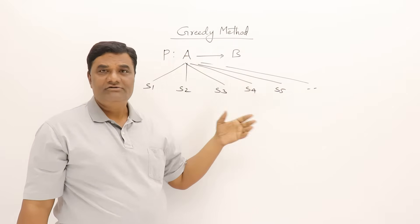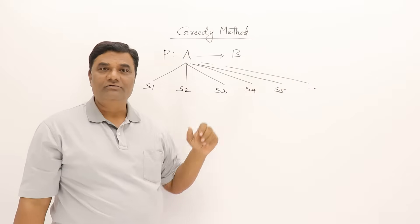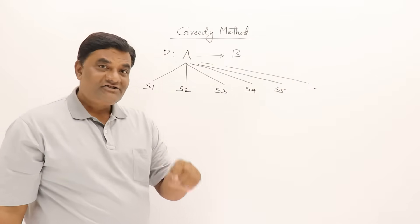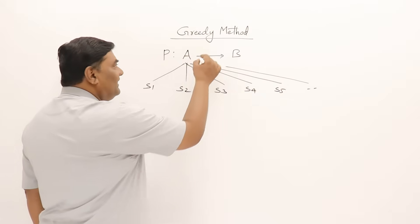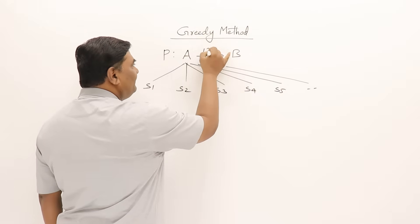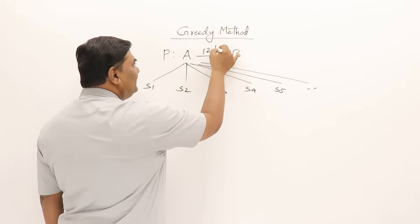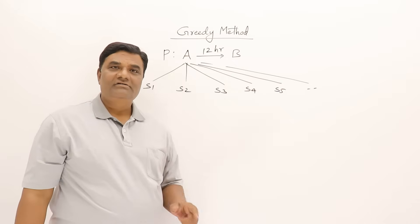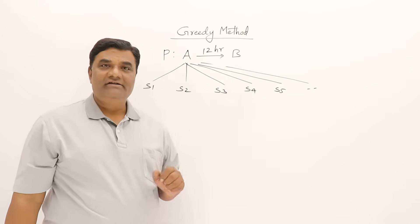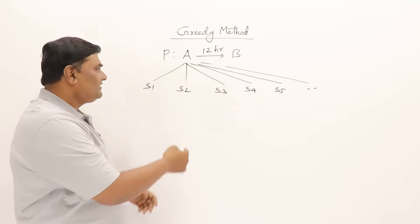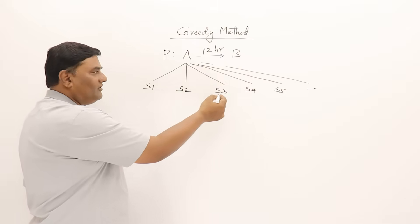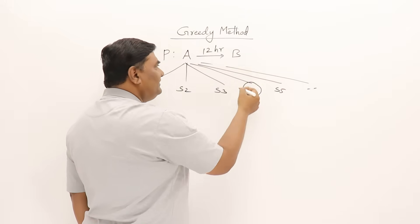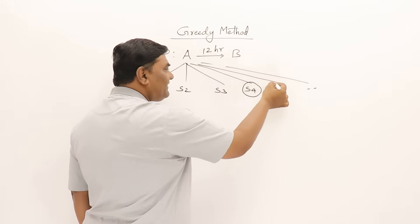So my problem is to travel from location A to location B and there are many solutions. But there is a constraint: I have to cover this journey within 12 hours. Suppose I cannot cover it if I go by walk or by car, so I can cover it only if I go by train or flight.